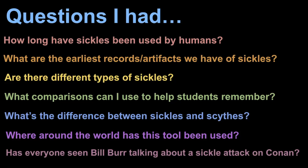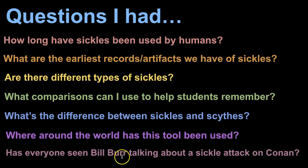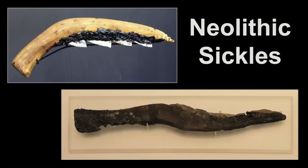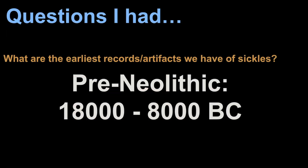As I teach this to my students I'm going to get certain questions: First, how long have sickles been used by humans and what are the earliest records or artifacts we have of them? Are there different types? What comparisons can I use to help my students remember that sickle pattern? What is the difference between a sickle and a scythe? And where around the world has this tool been found? Some of the earliest human artifacts we've found in archaeology are neolithic sickles — you can see this one is serrated, this one looks like it may have been broken off. The earliest records go back to the pre-neolithic period, from about 18,000 BC to 8,000 BC.